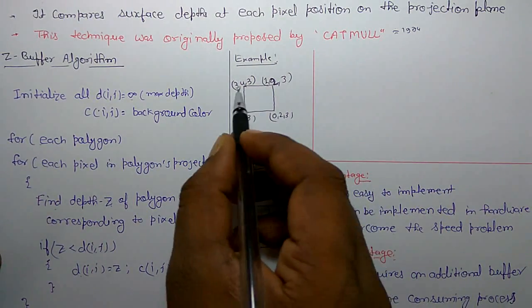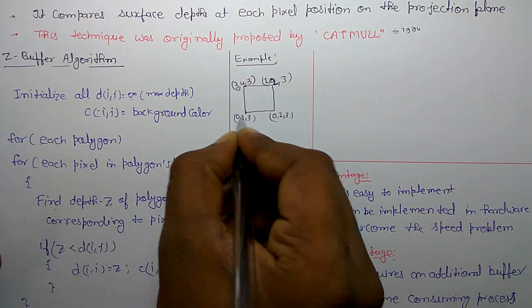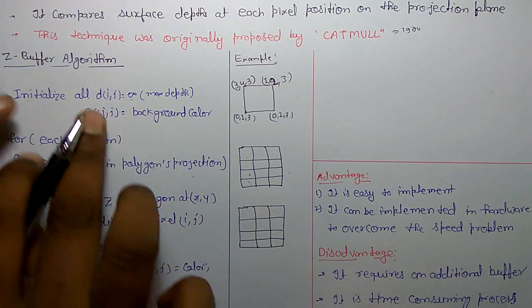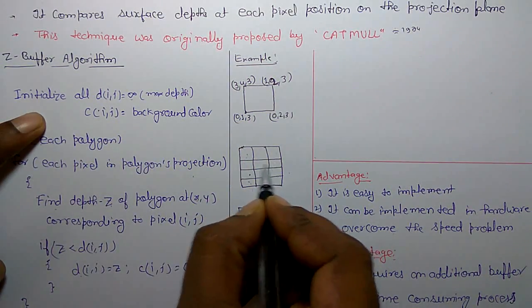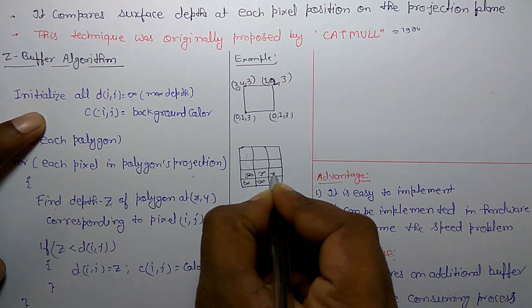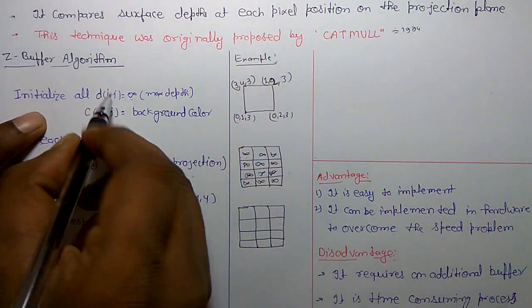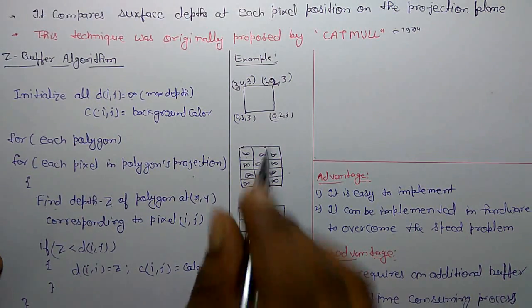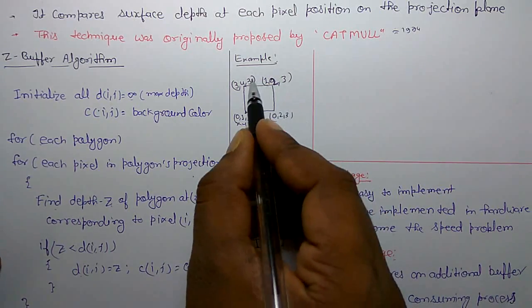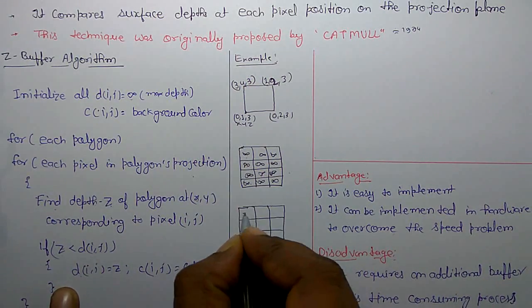For example, consider this rectangle image with coordinates 0,1,3 and 0,2,3 and 0,1,2,3 and 3,4,3. Starting with the depth assumed as infinite for each pixel, we look at the Z value. Here x, y, z — the Z value is 3 everywhere, so when compared to infinite, each pixel's depth will be replaced with 3.